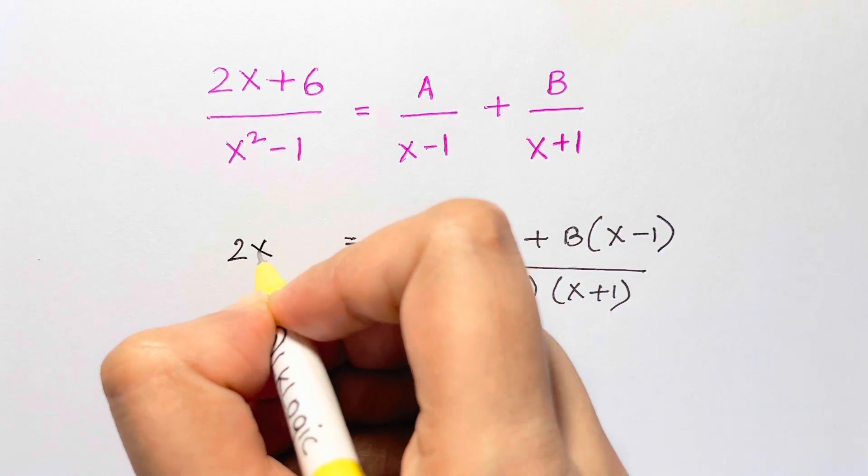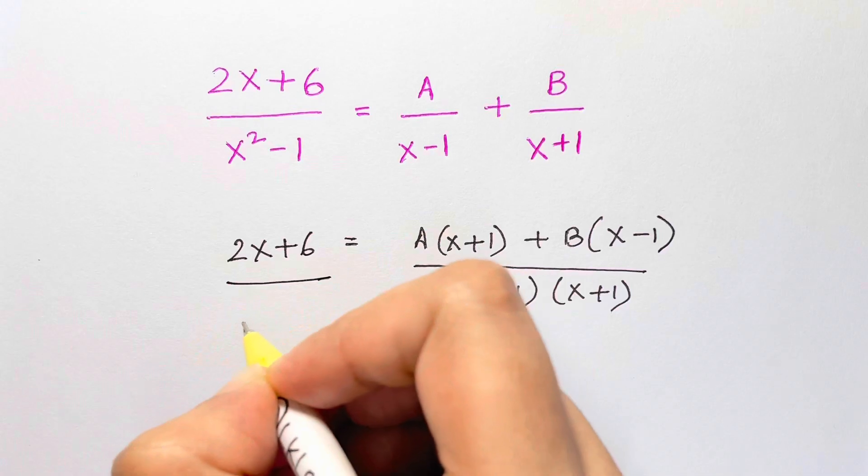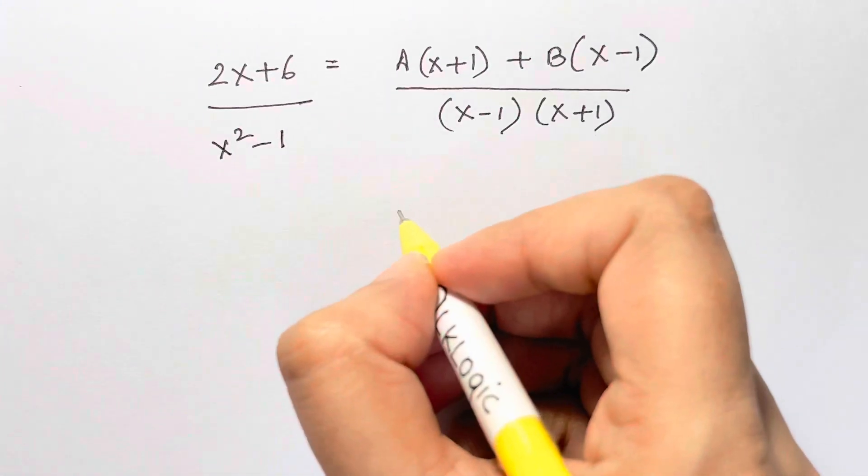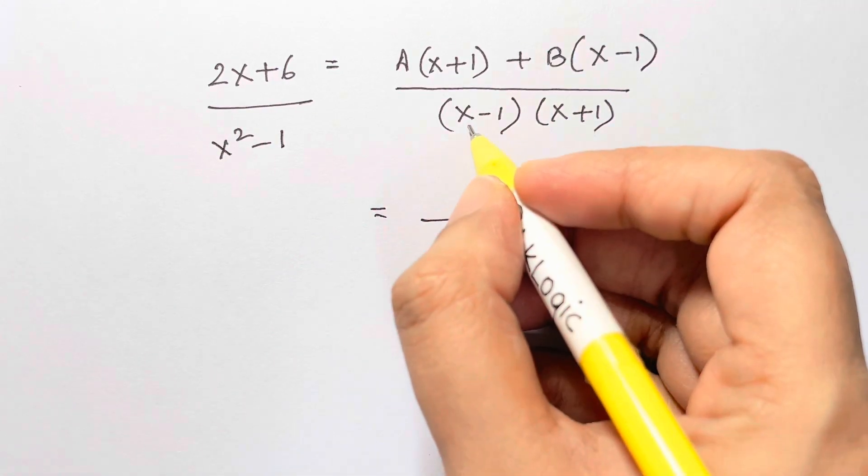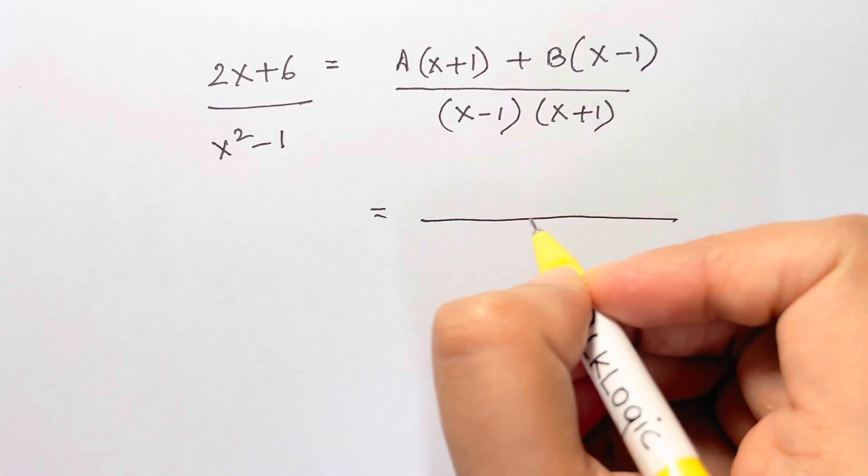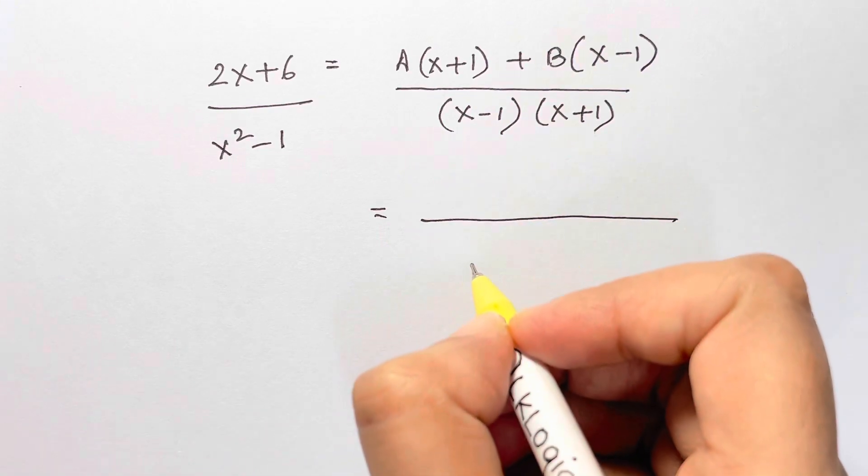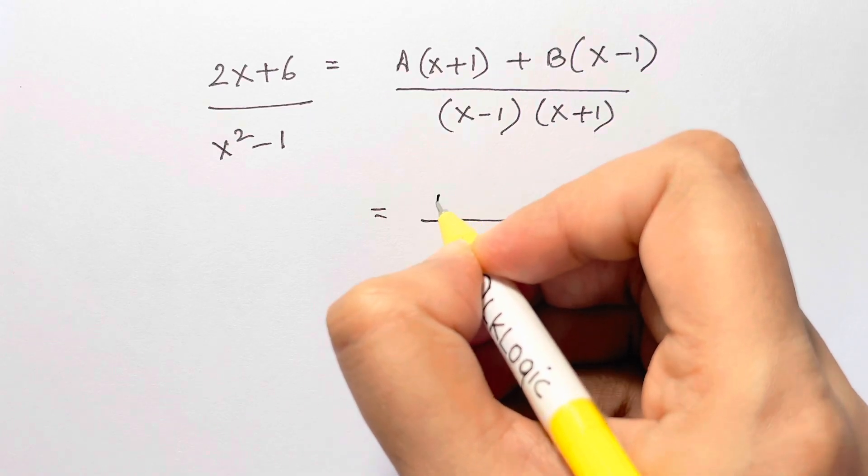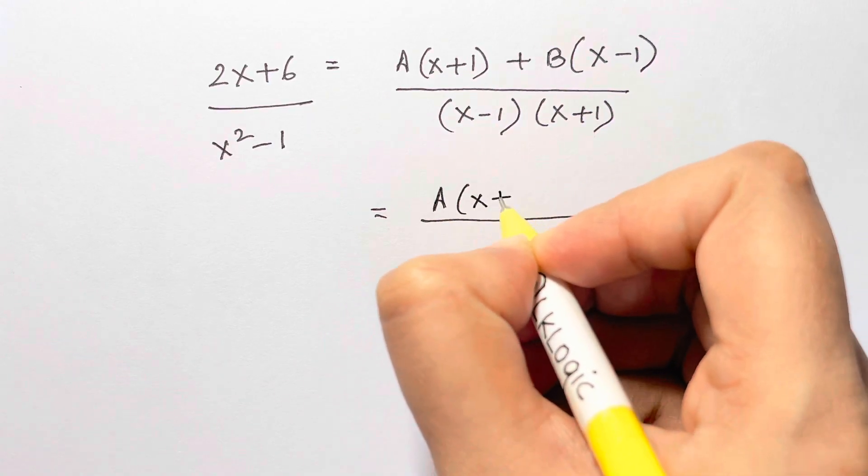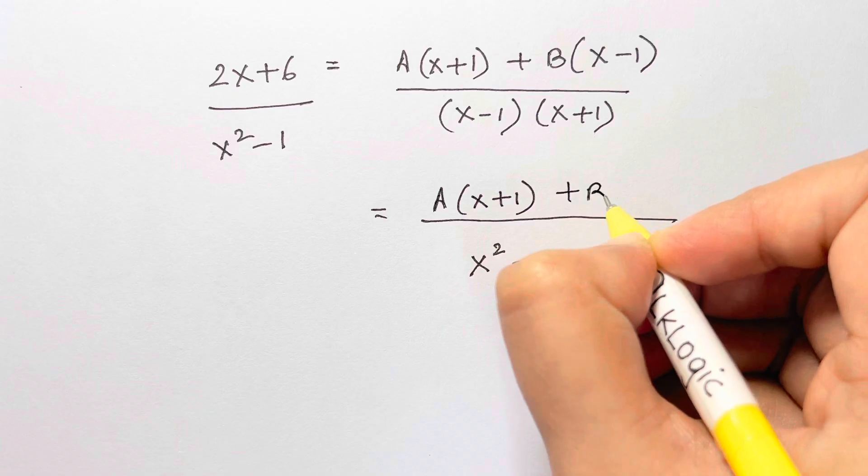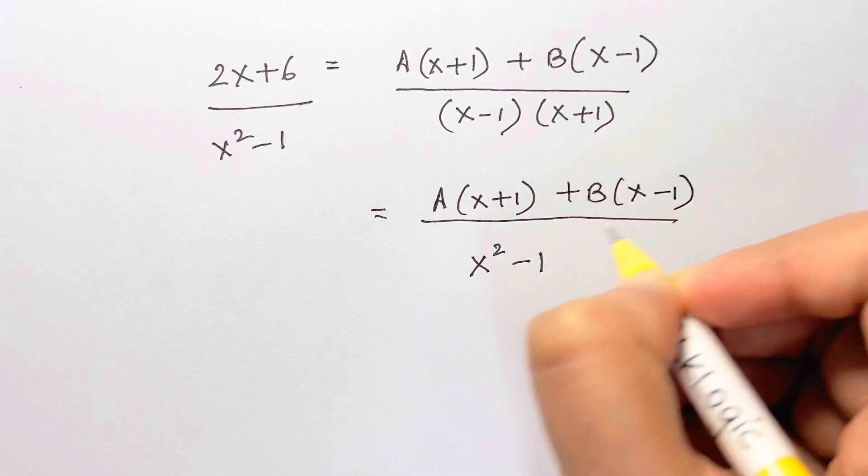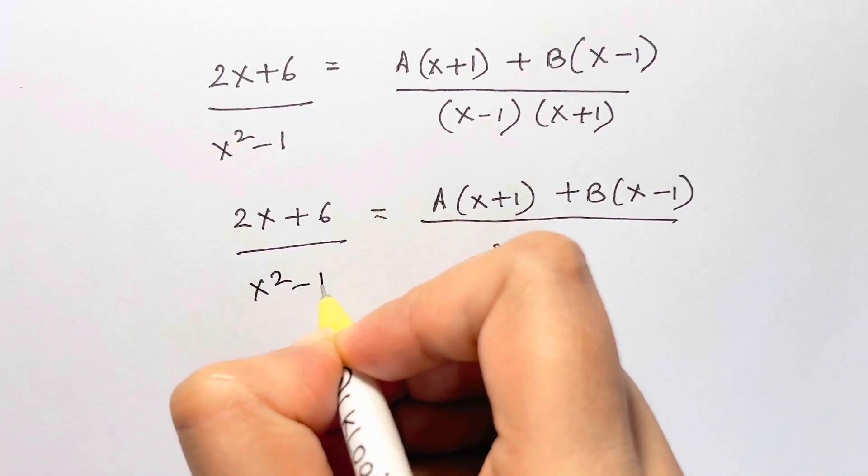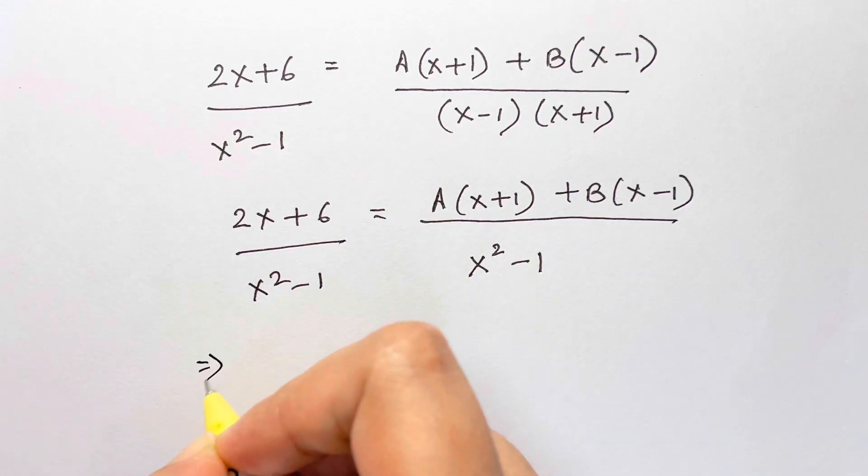And here I have 2x plus 6 over x squared minus 1. Now the bottom is in the form of an identity which is A minus B times A plus B, and that's A squared minus B squared, which is x squared minus 1 squared. And at the top I already have A times x plus 1 plus B times x minus 1, which is equal to 2x plus 6 over x squared minus 1.